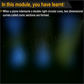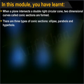In this module you have learnt that when a plane intersects a double right circular cone, two-dimensional curves called conic sections are formed. There are three types of conic sections: ellipse, parabola, and hyperbola.